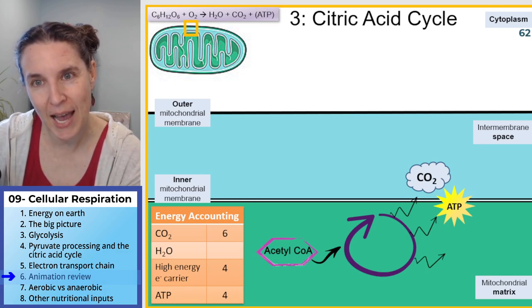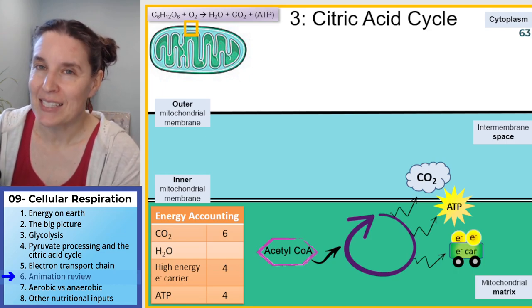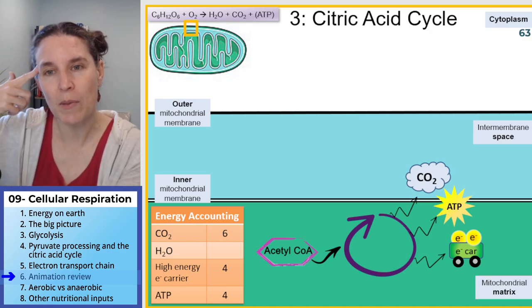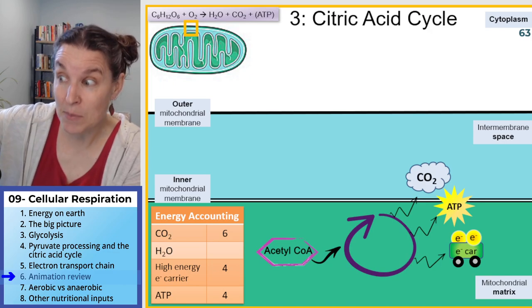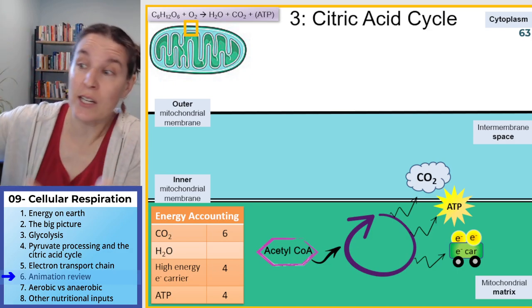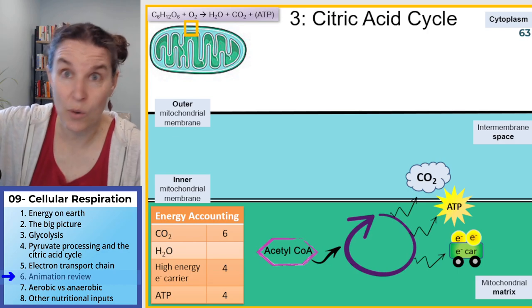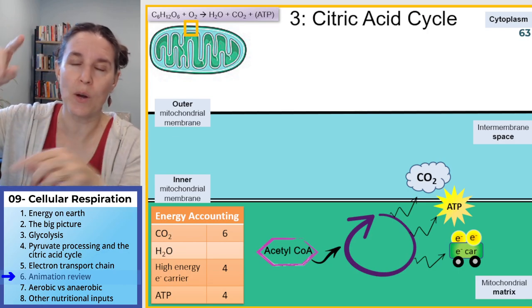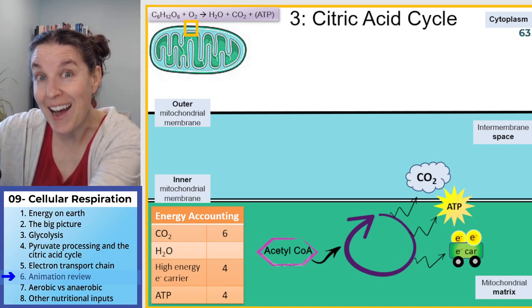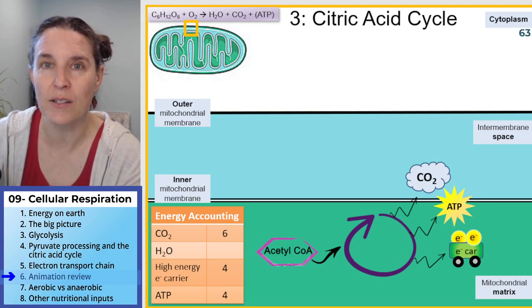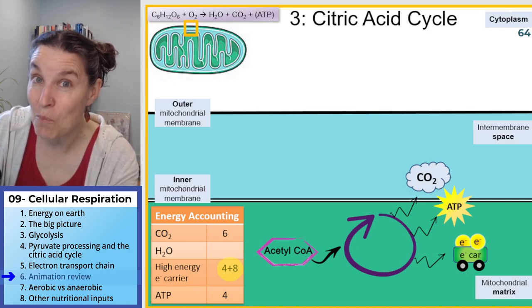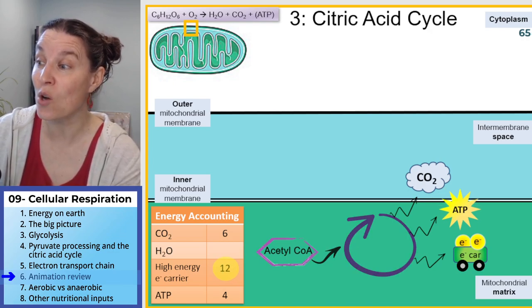What else comes out? The big moneymaker: the electron carriers. The high-energy electron carriers get loaded up. The empty carrier arrives at the citric acid cycle, and all those molecules cycling through chemical reactions — getting rid of all the carbons from glucose — capture energy in high-energy electrons and give them to the electron carrier. We load up eight of those, giving us a total of twelve high-energy electron carriers.